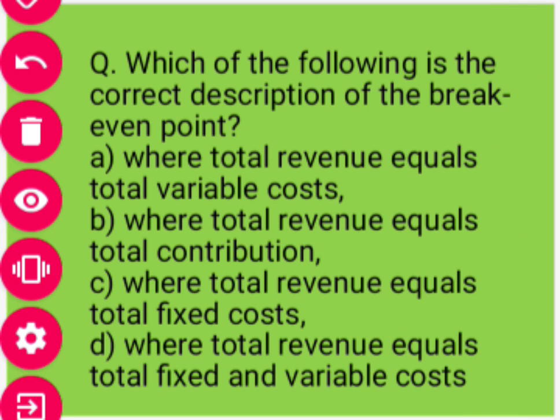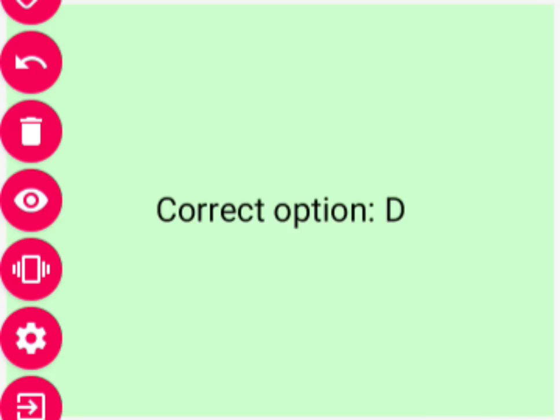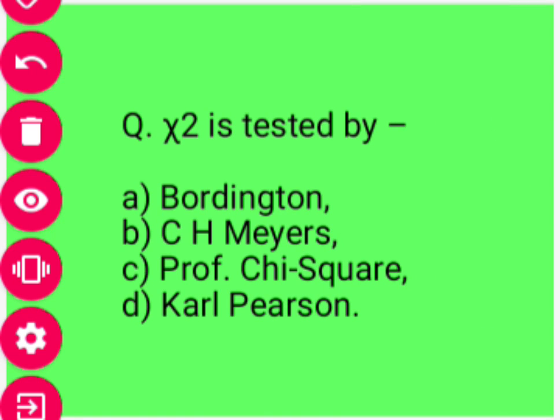Next: Which of the following is the correct description of the break-even point? Options: a) where total revenue equals total variable cost; b) where total revenue equals total contribution; c) where total revenue equals total fixed cost; d) where total revenue equals total fixed and variable cost. Correct option hoga option D — jab break-even point hota hai, total revenue equal hota hai total fixed cost plus variable cost ke. Correct option D.